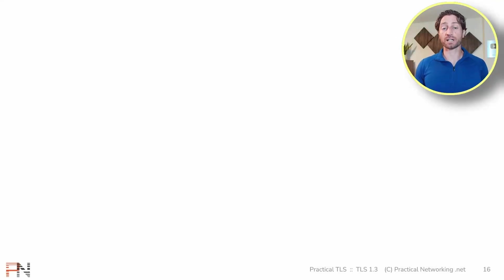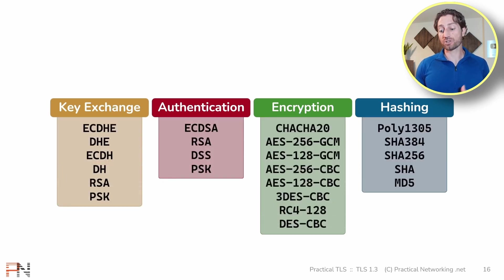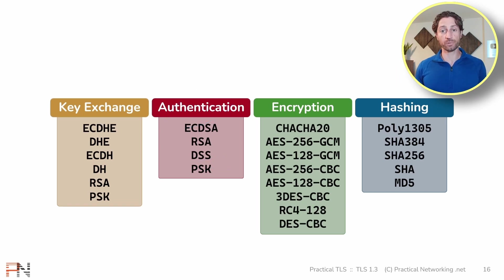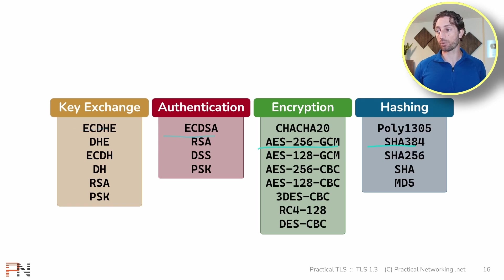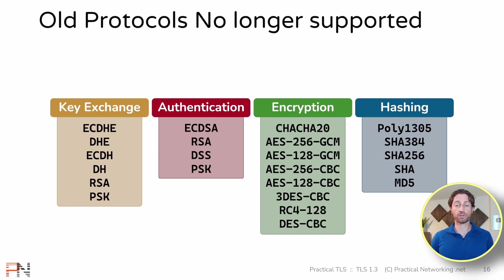Back in module 5 of the Practical TLS course, we identified a cipher suite as a choosing of a specific protocol for each of these four security services. We also defined a bunch of the individual protocols you might find underneath key exchanges, and then a bunch of individual protocols you might find underneath authentication and encryption and hashing as well. A cipher suite is simply picking one combination of protocols for each of these four services, and the first change that TLS 1.3 brings about is that it is no longer going to support older protocols.